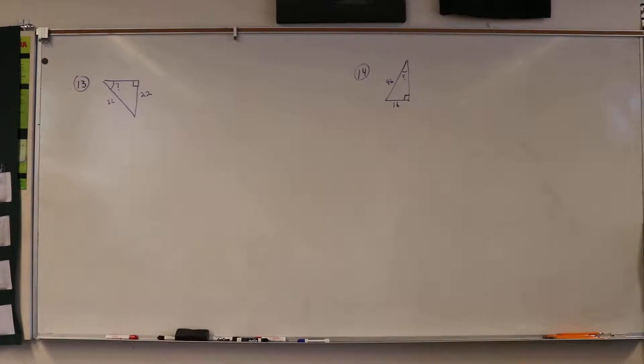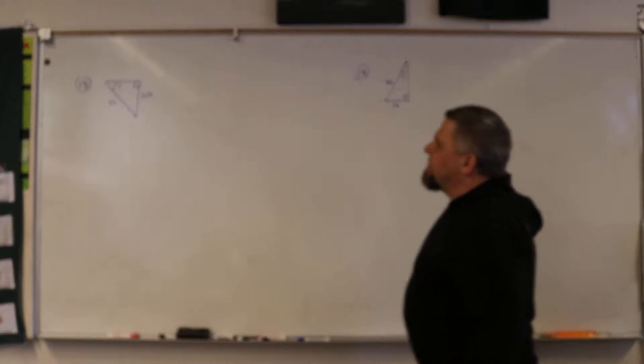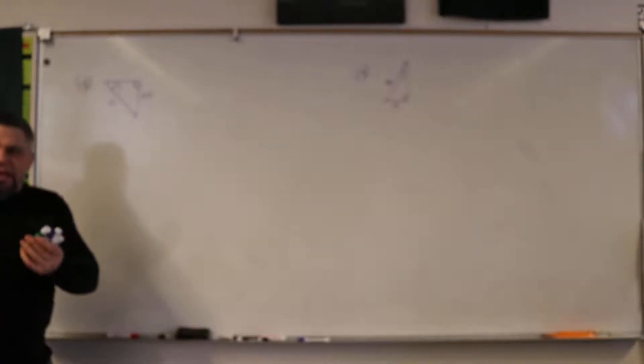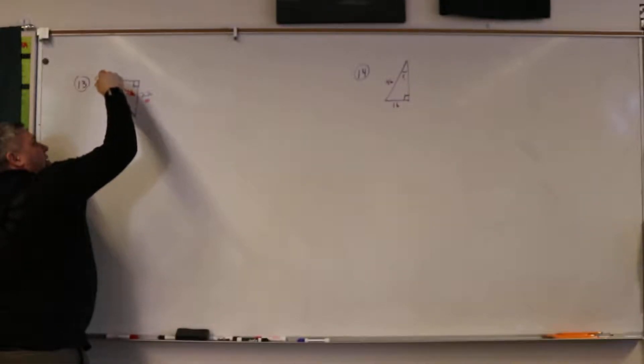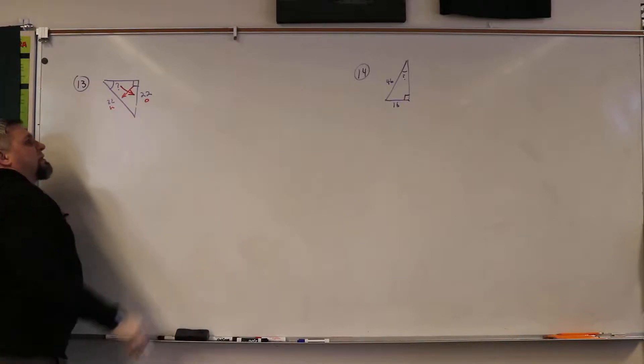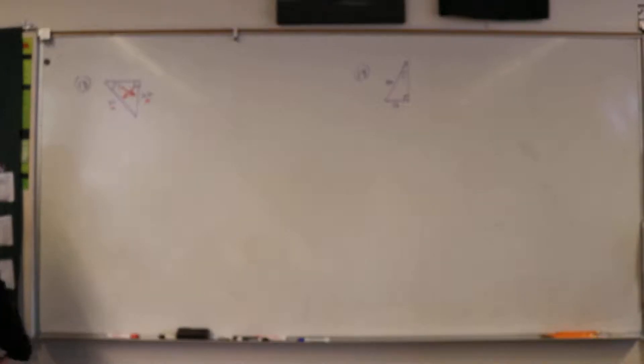Alright, problems 13 to 14, pre-calc. Number 32: We want to find the angle. This is opposite and this is hypotenuse, so we'll use sine.